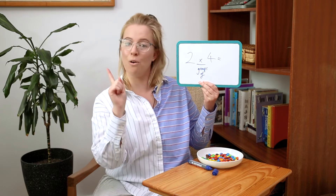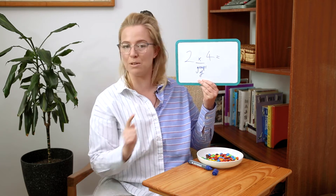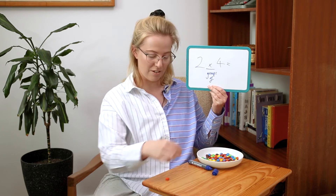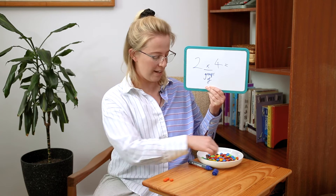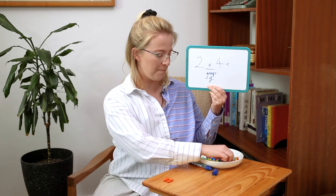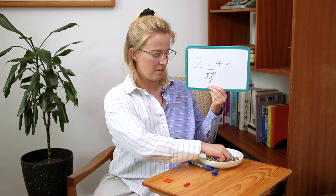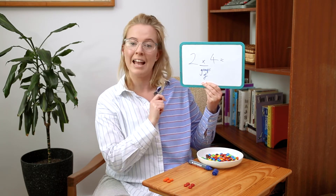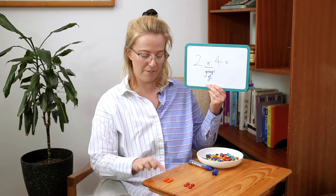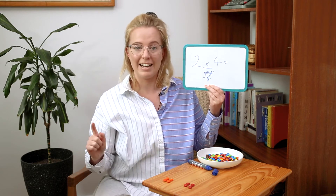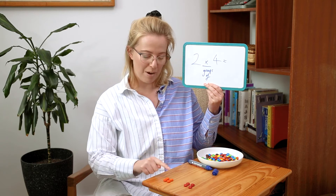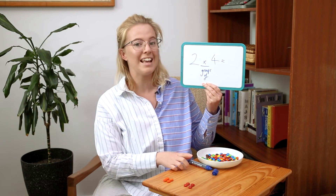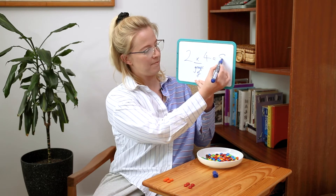Here is our next equation: two times four, or two groups of four, equals. Let's create two groups with four in each group. One group with four counters — one, two, three, four — and a different color for the other group — one, two, three, four. Now we have two groups with four each. Adding all the counters together: one, two, three, four, five, six, seven, eight. So two times four, or two groups of four, is eight.